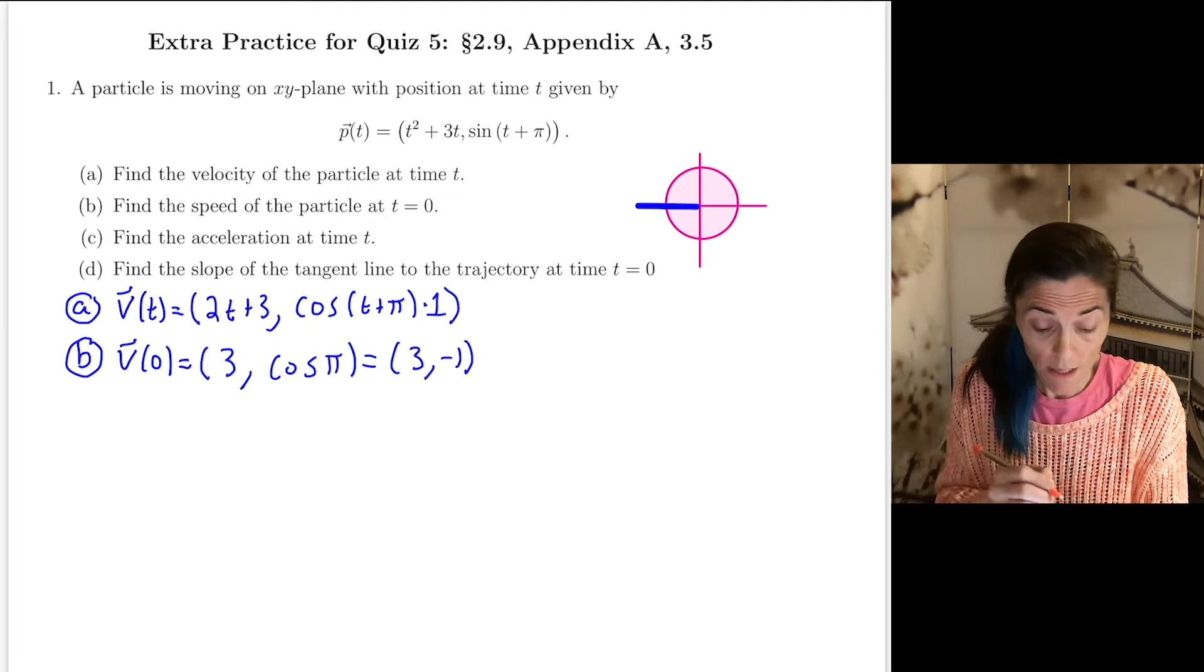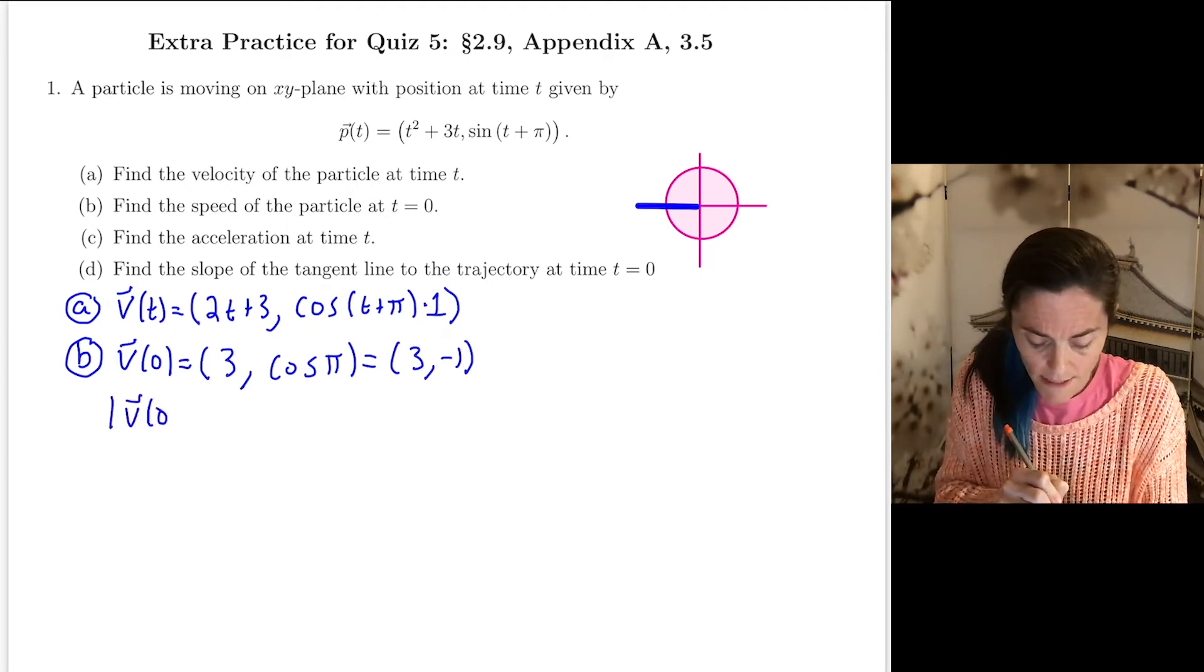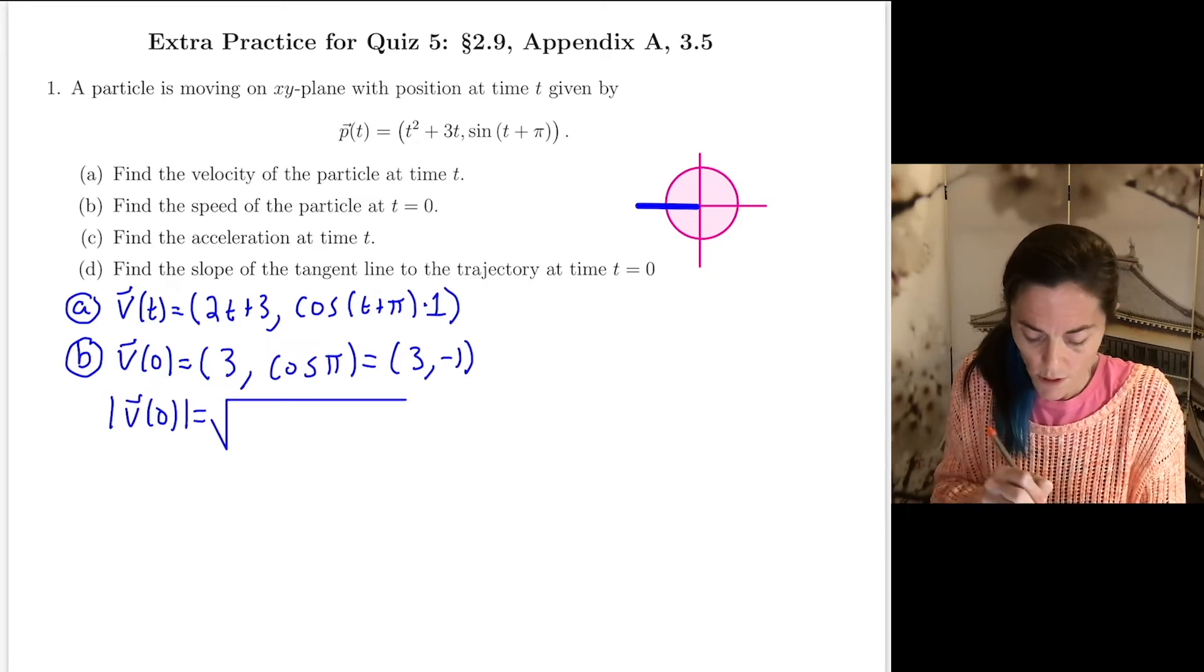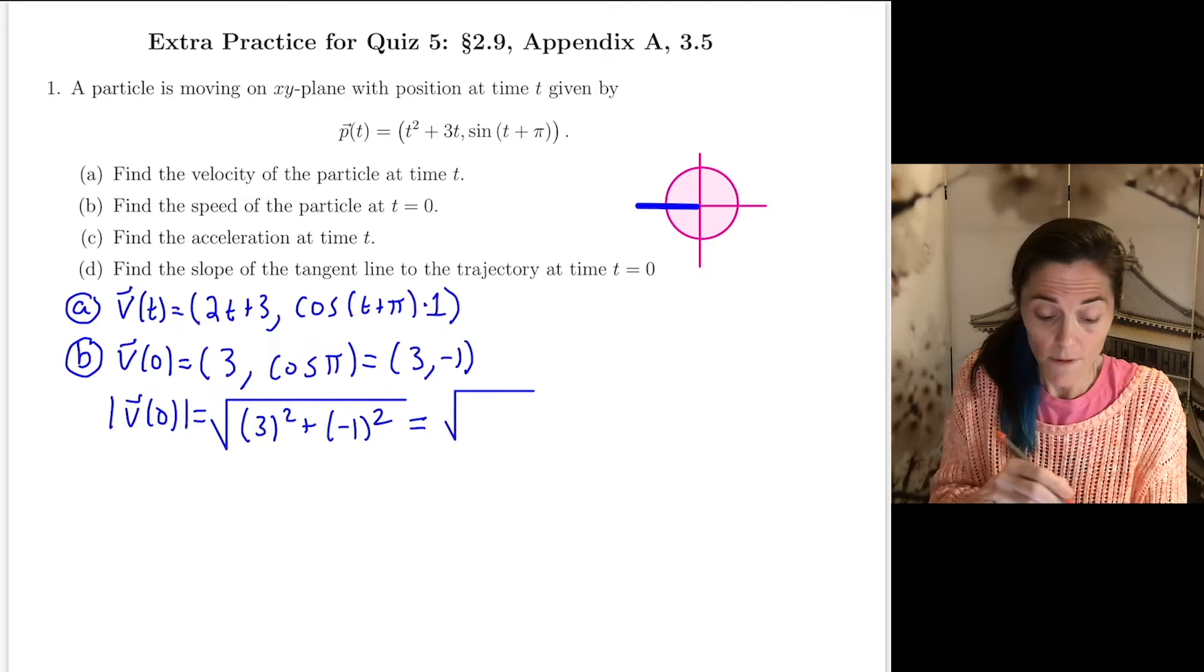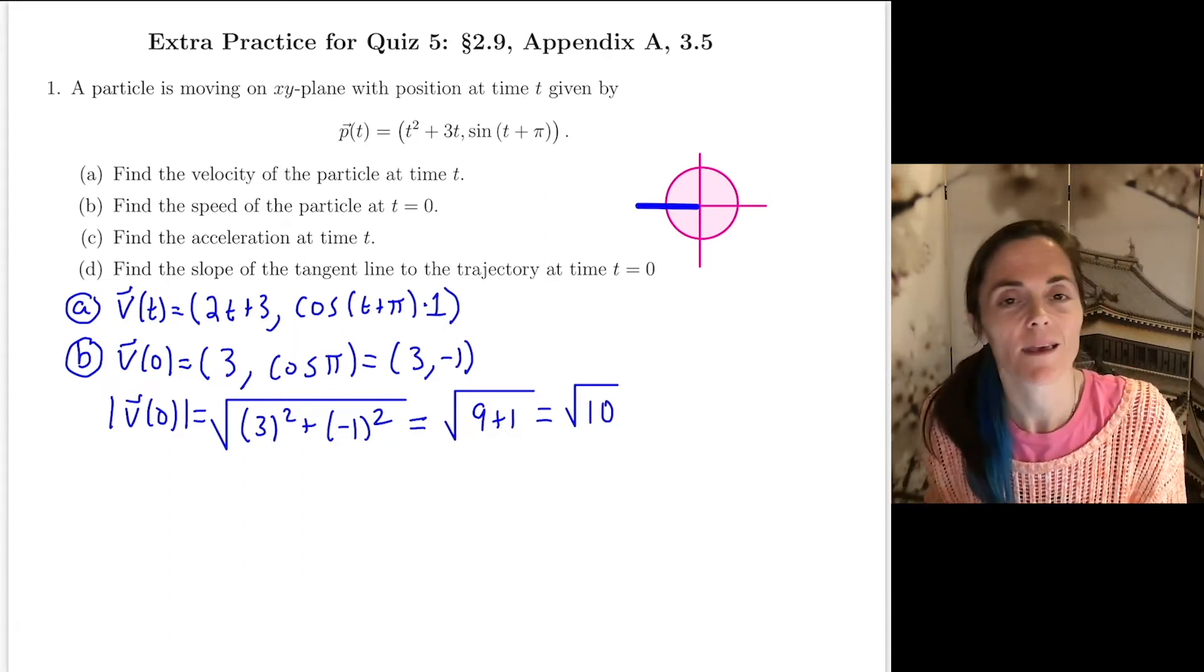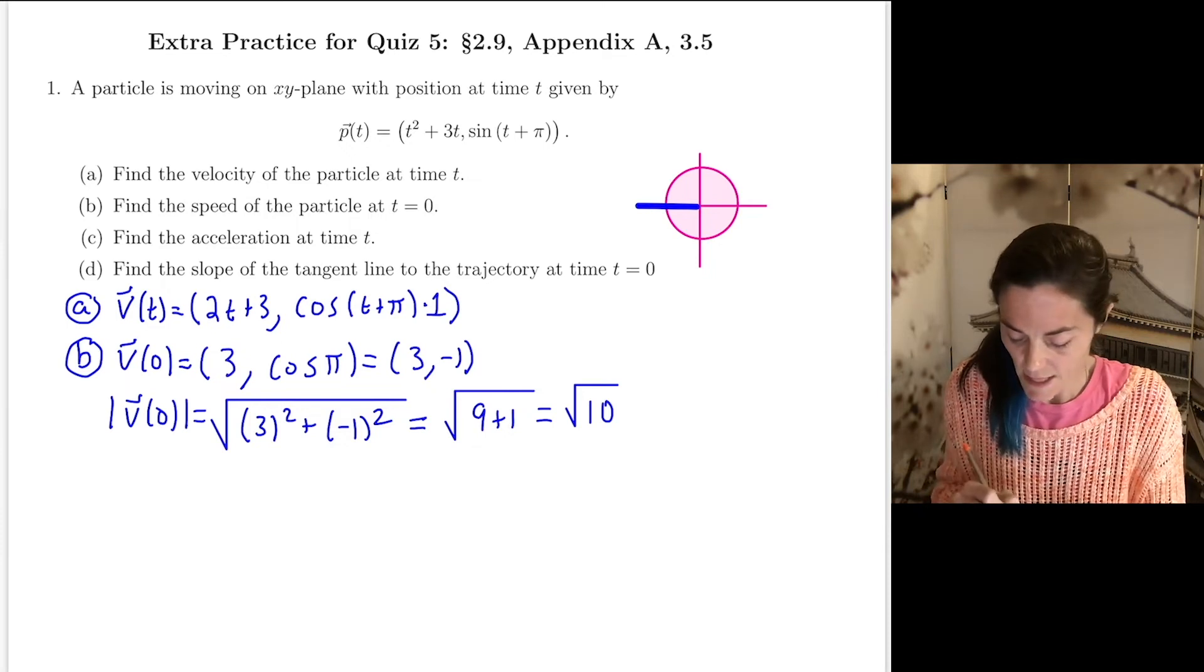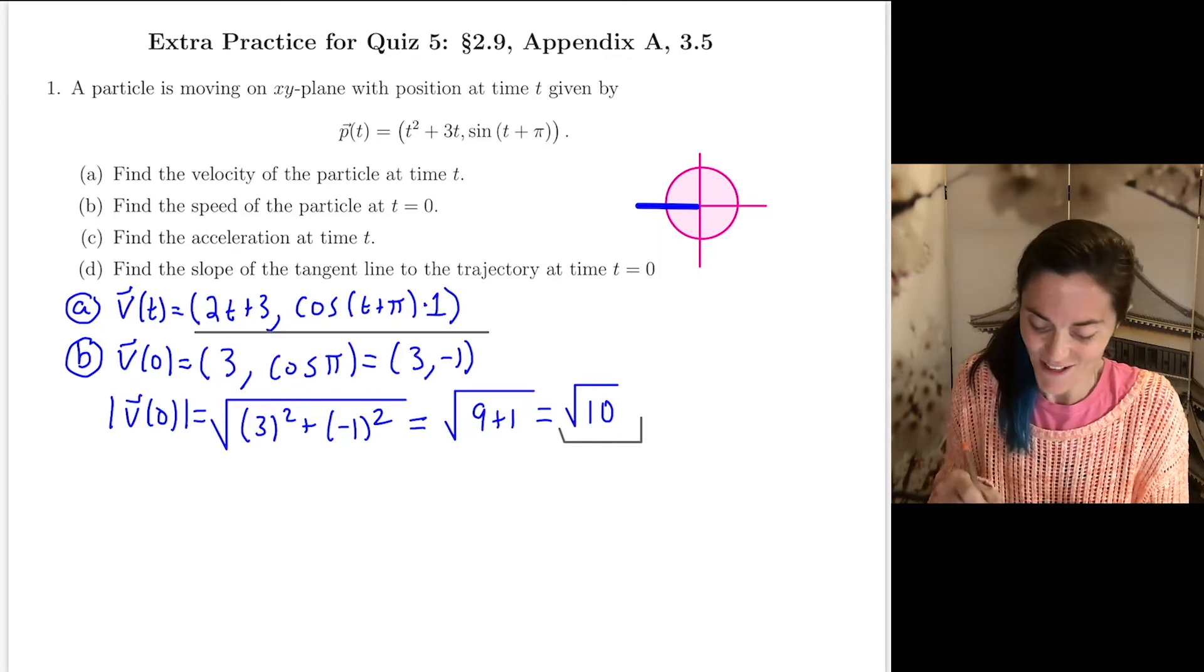But first I need to calculate the velocity at 0, and then that will help me get the speed at 0. I just take its length. At 0, I get 3 and cosine of pi, which is 3 minus 1. Because if you do a little unit circle here, pi is out here where the cosine is minus 1 and the sine is 0.